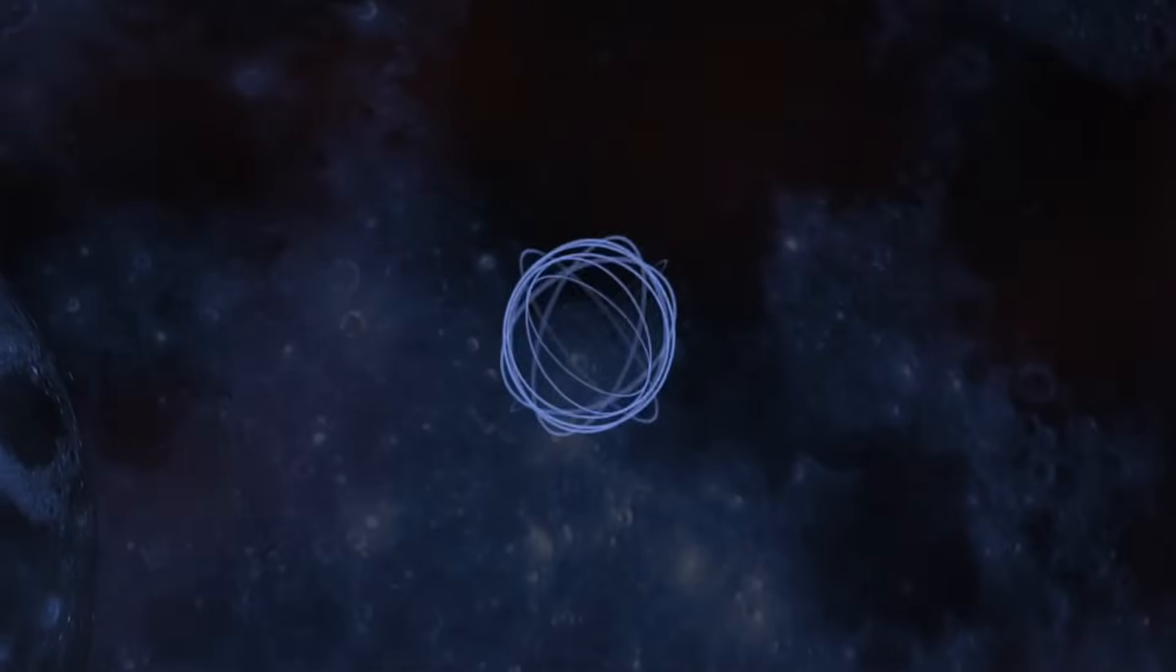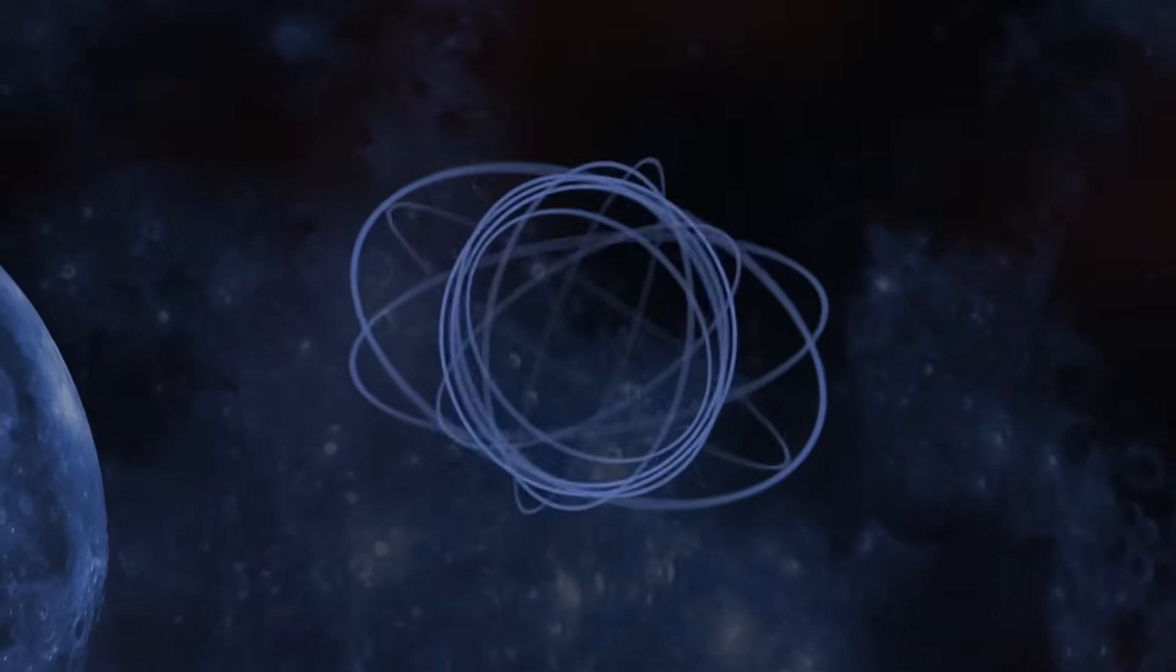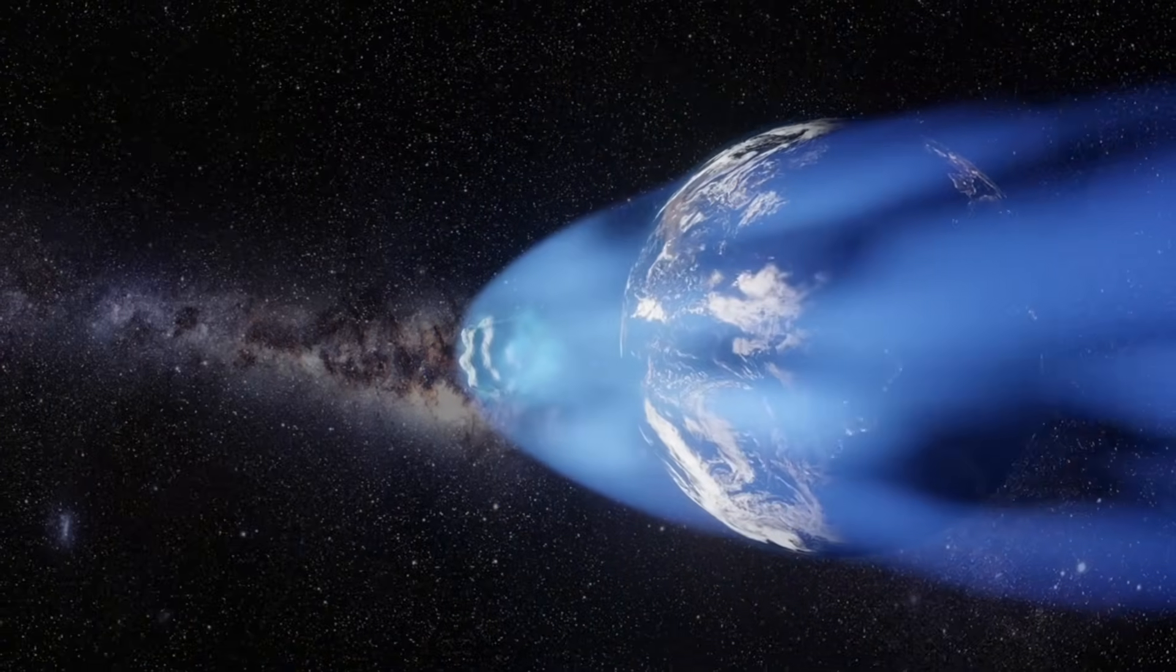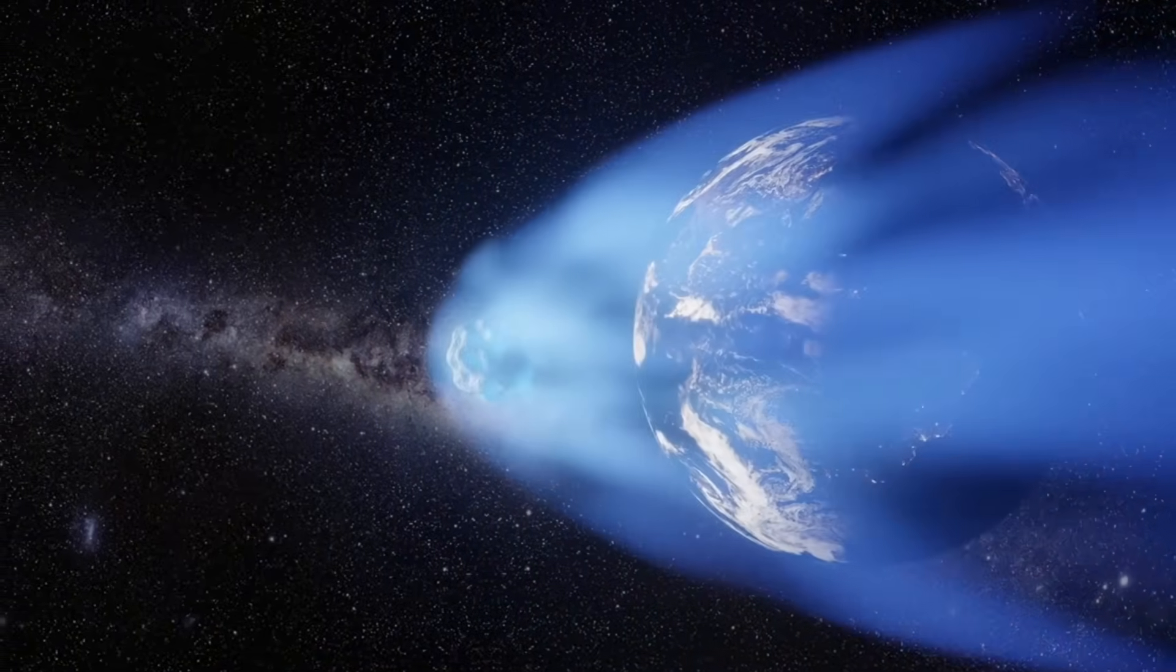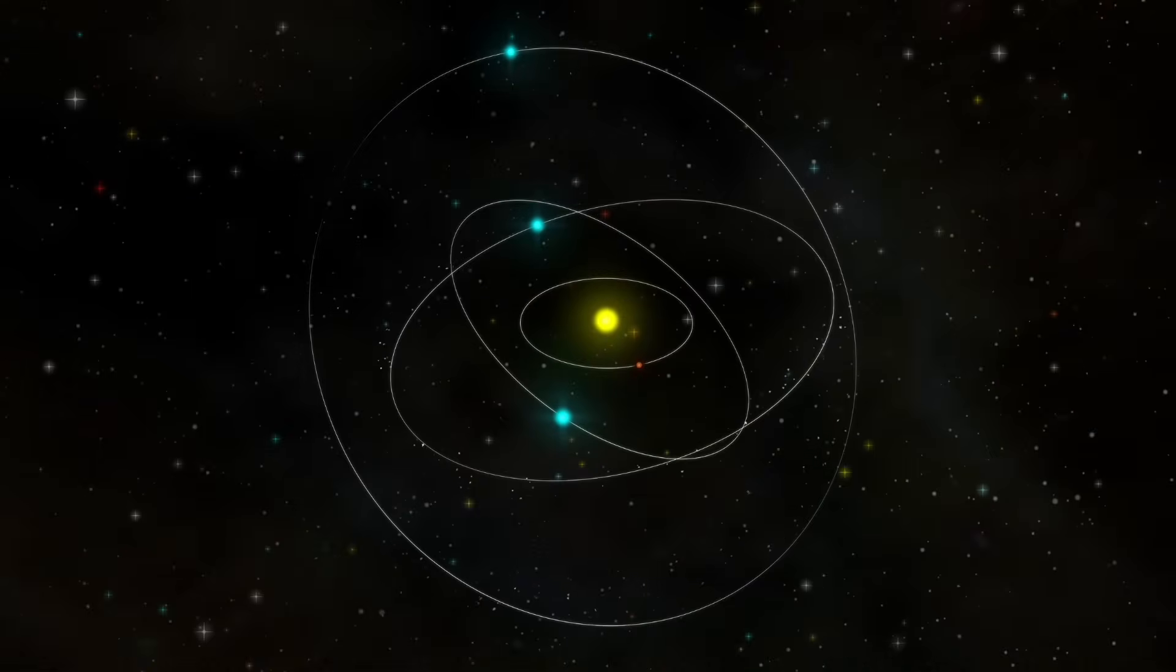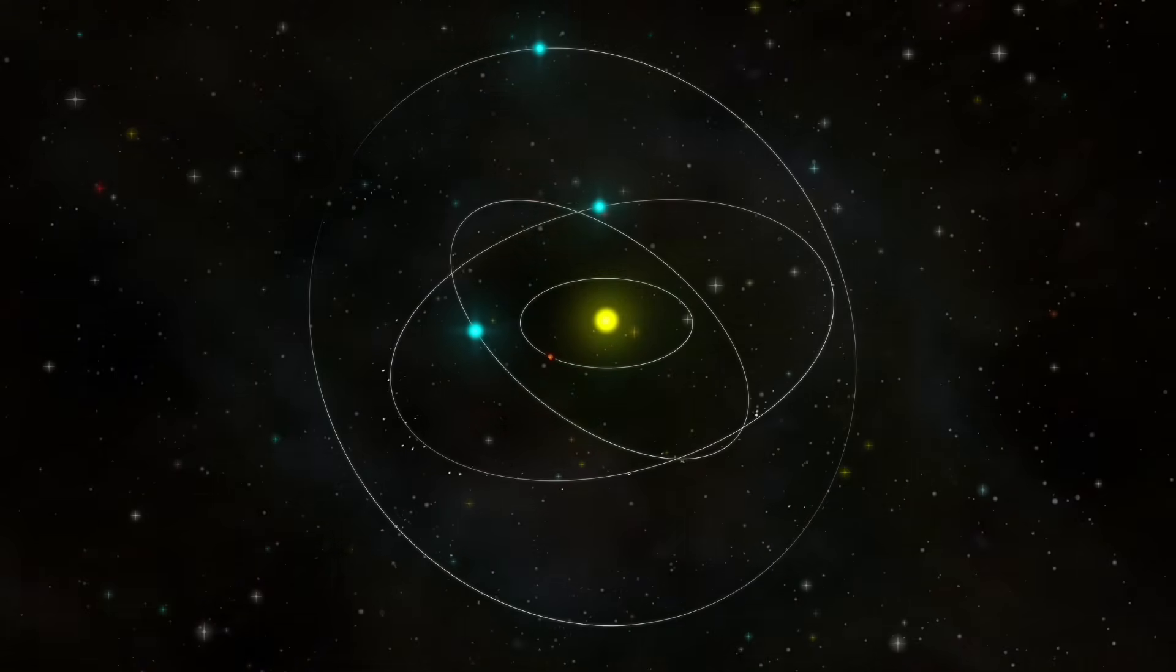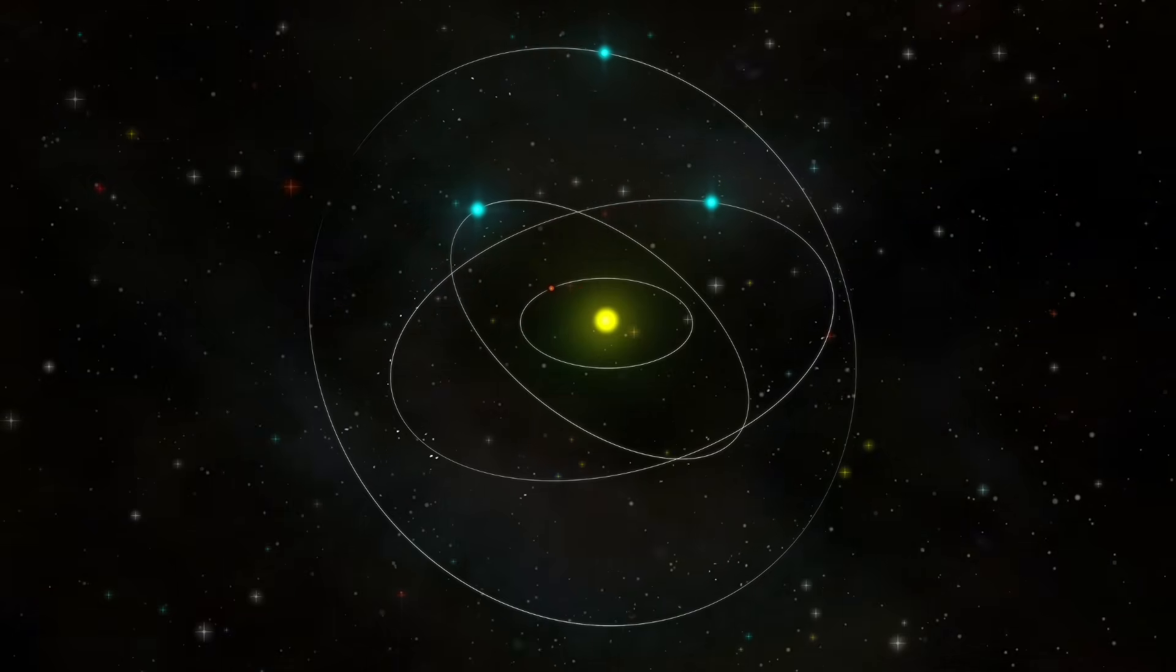Now, here's where the story takes an intriguing turn. Harvard astrophysicist Avi Loeb has raised eyebrows by suggesting we should at least ask the question, could there be something artificial about 3i Atlas? He's pointed to its unusual trajectory and chemical composition as worth investigating. The vast majority of astronomers disagree, and the evidence overwhelmingly supports a natural comet. But the debate itself reveals just how extraordinary this visitor truly is.